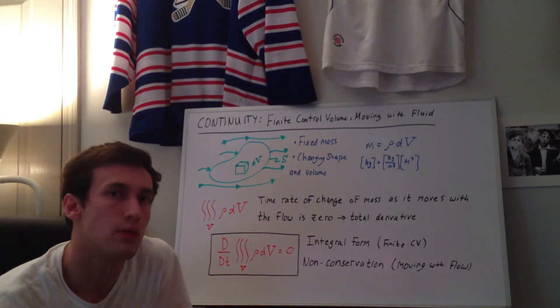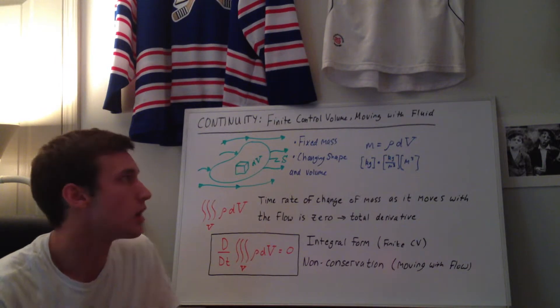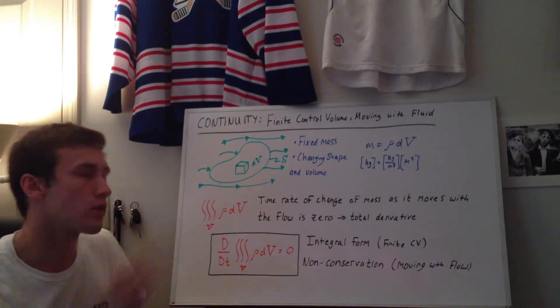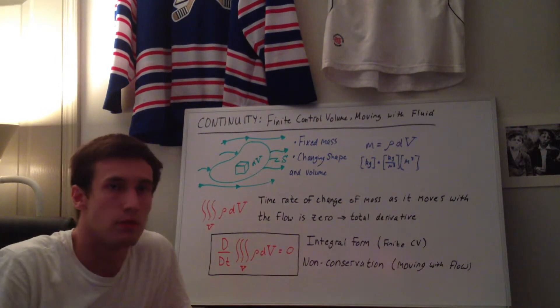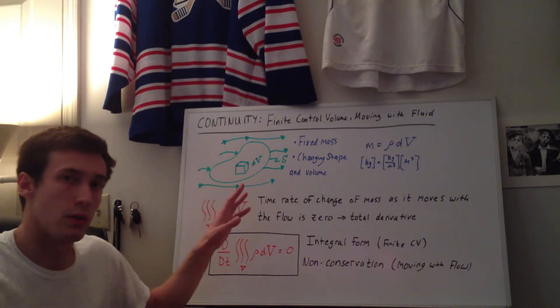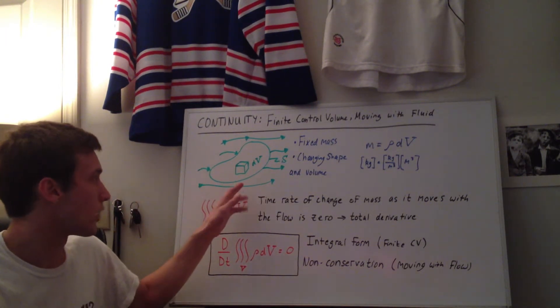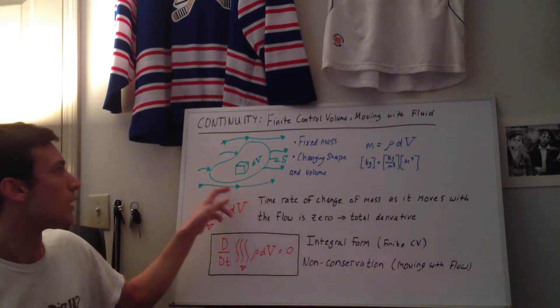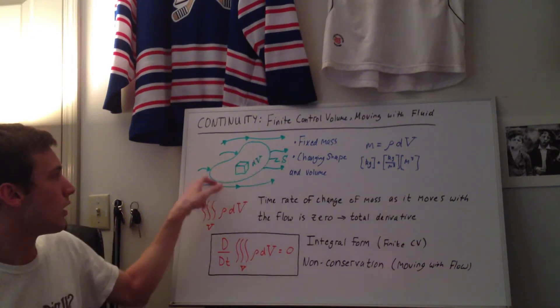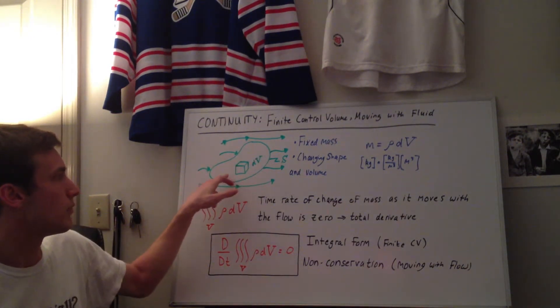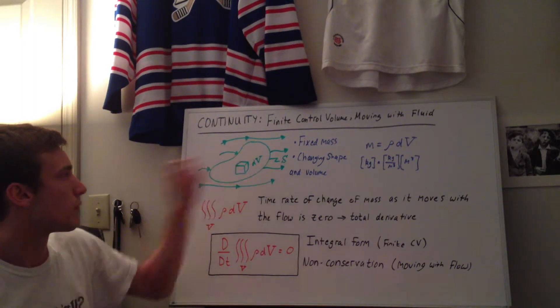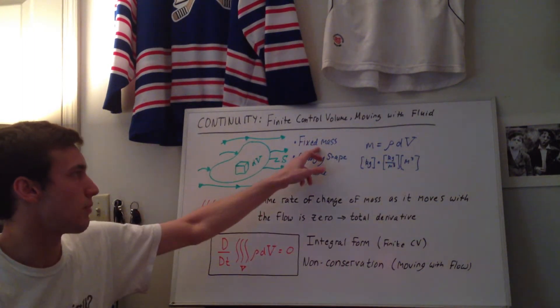This time I'm doing it from another one of my flow models, which is the finite control volume moving with the fluid, which I have drawn here. So we can see that we have this blob, which is a finite control volume, and it's moving with the flow, which means it has a fixed mass.